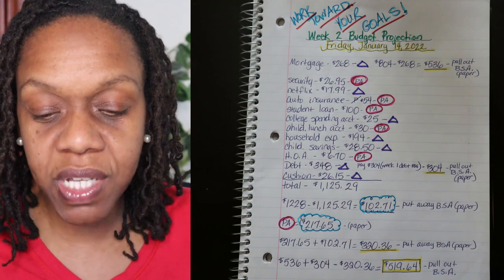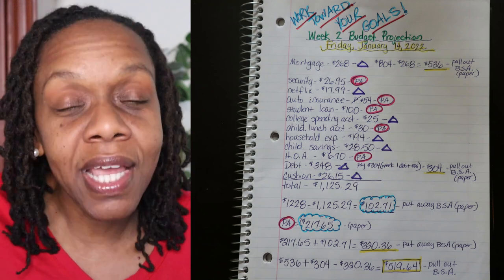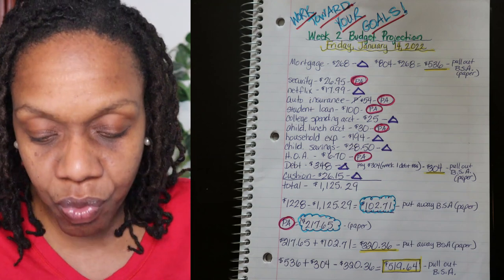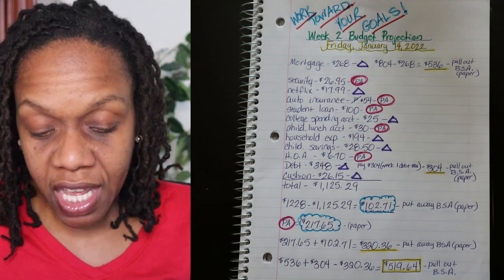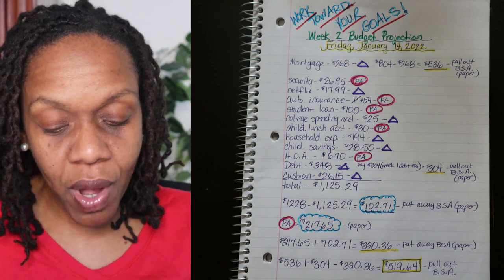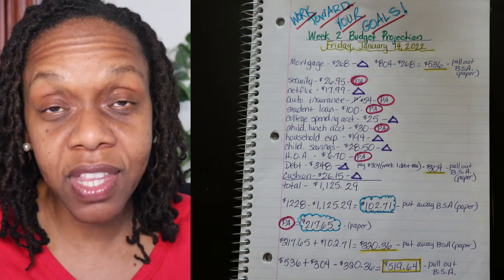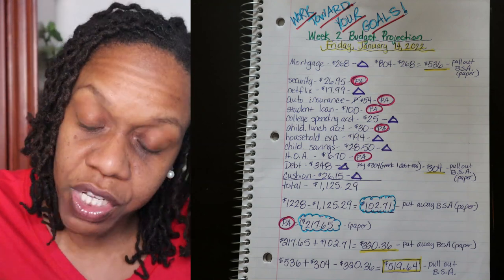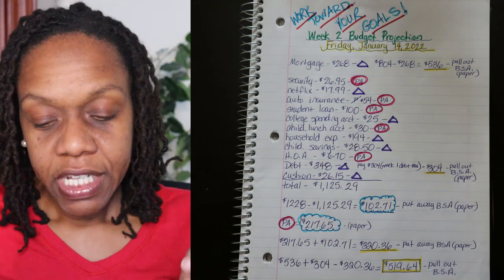Step number two, go back up through these expenses, put a PA with a pink circle around it beside each item that I will not be taking care of this upcoming week. The PA means put away, that means I'm putting it away in my bill savings account for later use. Then we will go down to the third from the last line on this sheet and we will add up all those totals. So that put away amount equals 217.65 and that is also another amount that I need to put away in the bill savings account because I'm not paying for those expenses this week. However I do project that money out of this week's pay, so we're doing that right here on paper as well. That number also has the blue cloud around it. That is step number three.